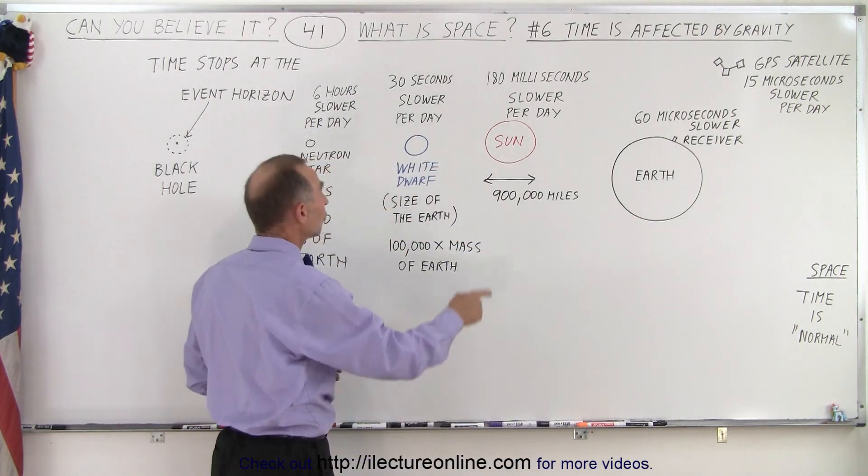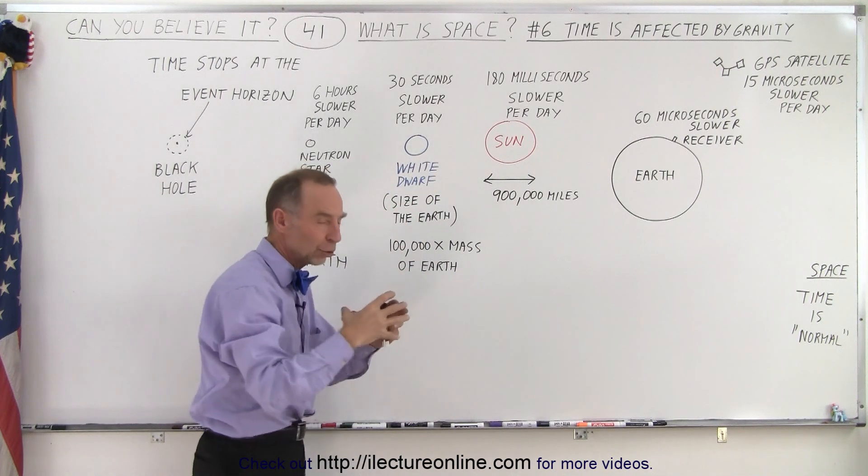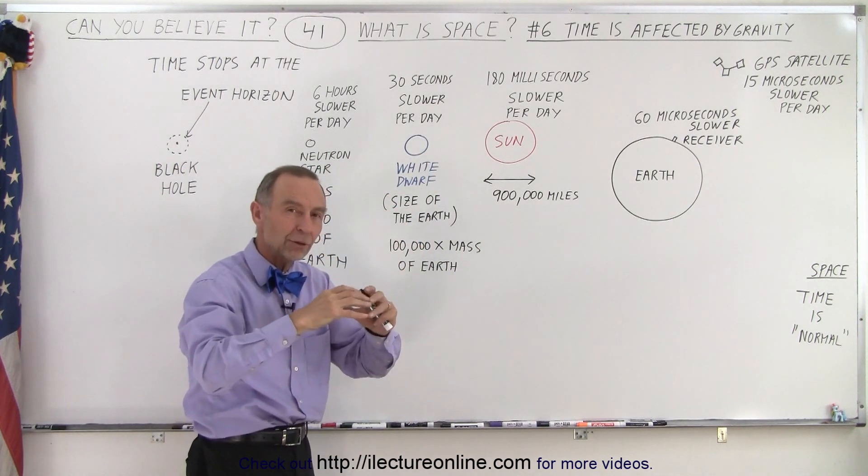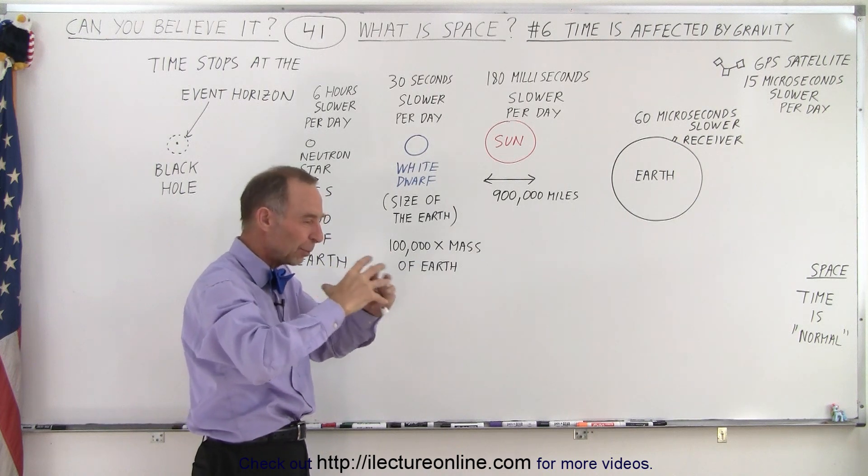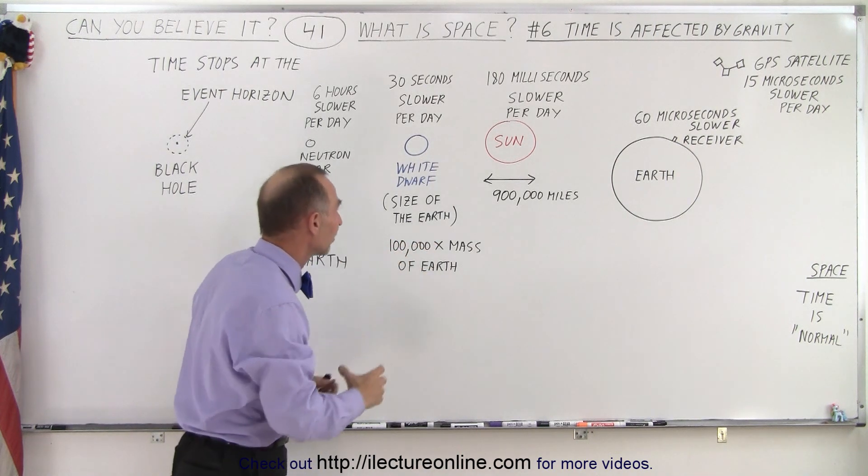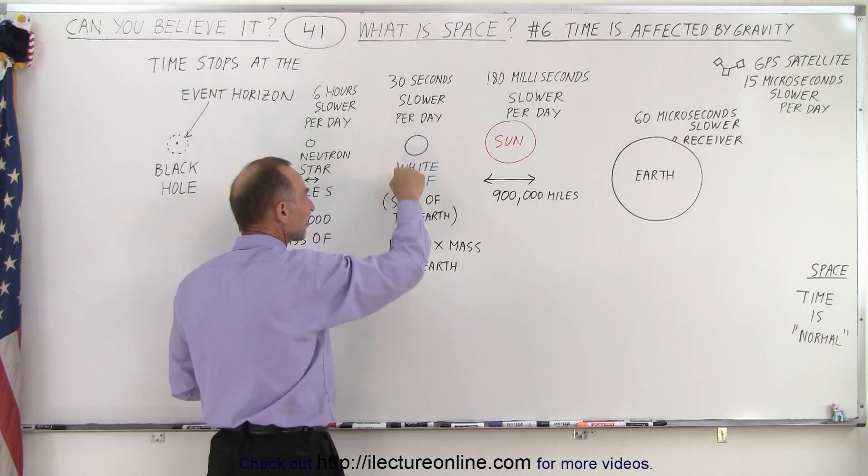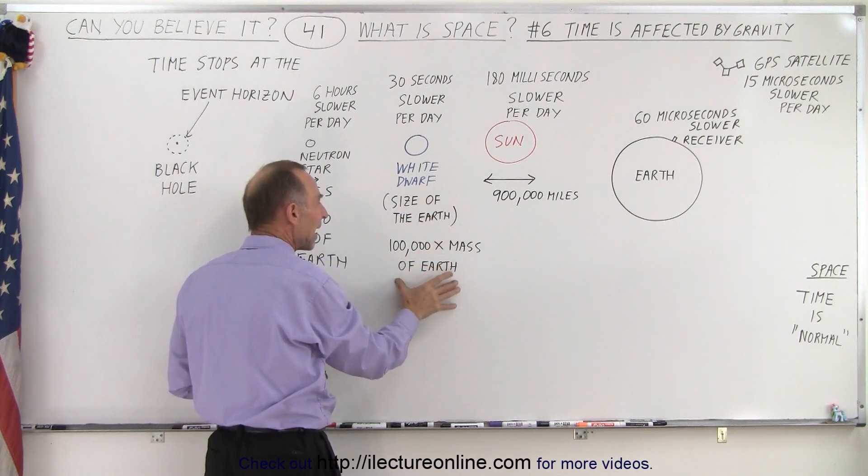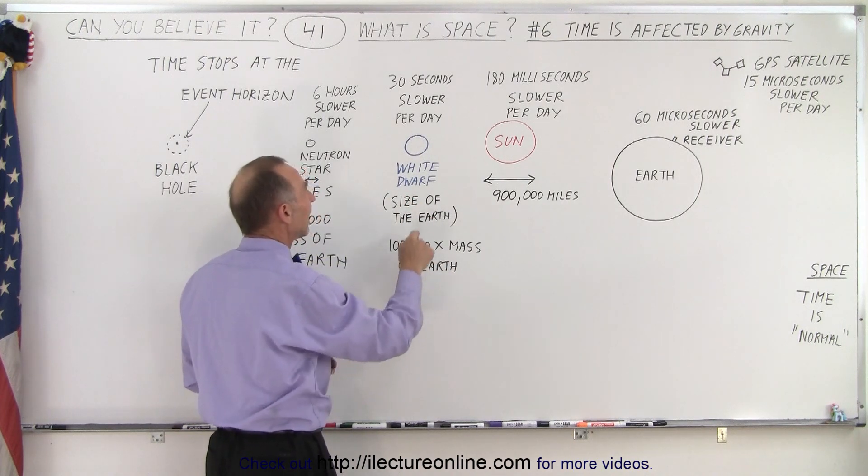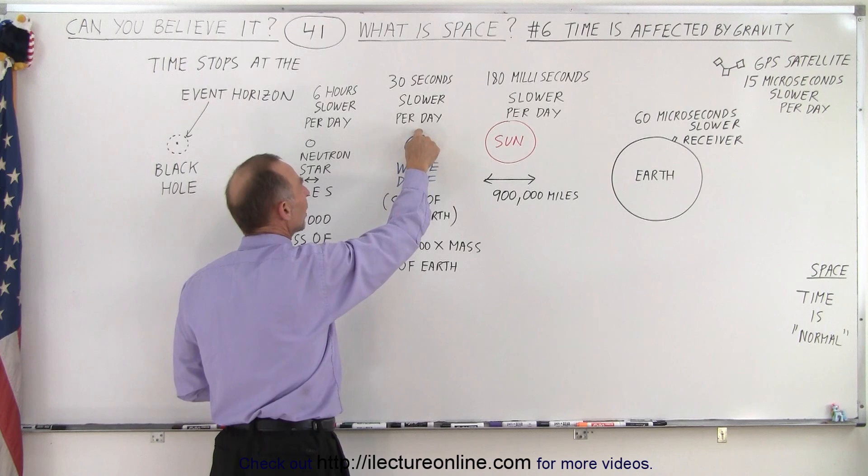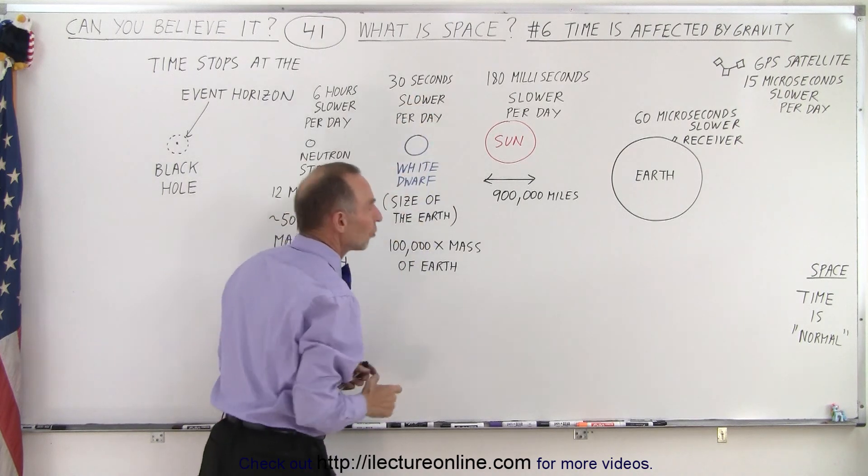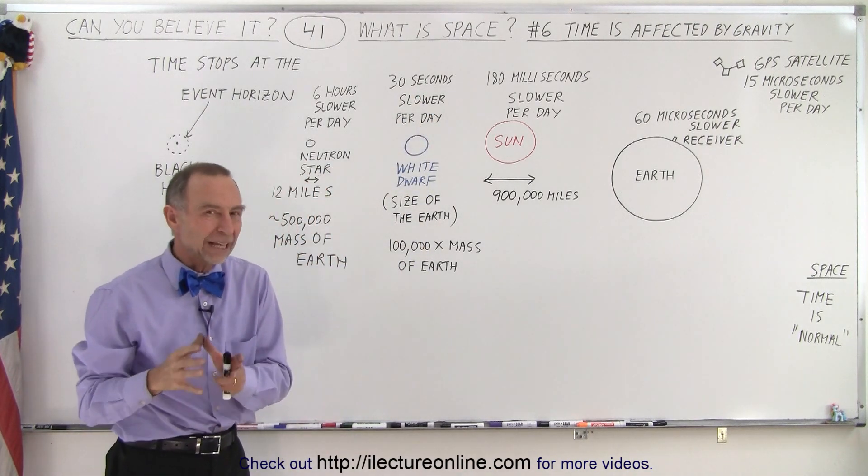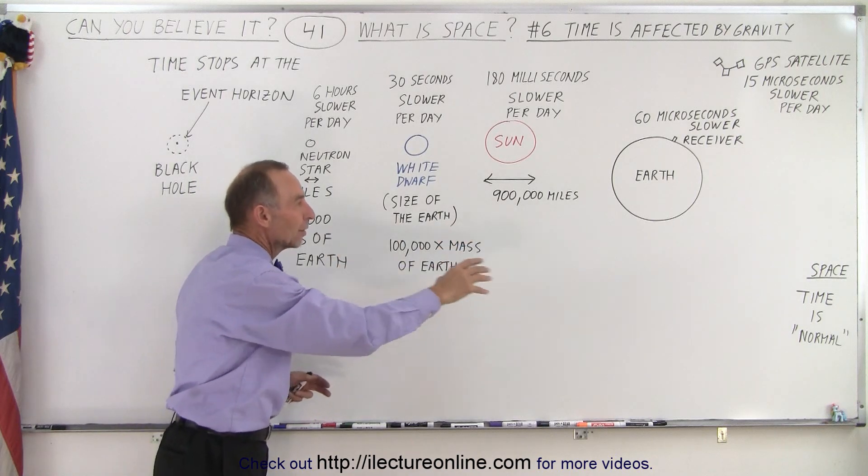And then if we go to a white dwarf, which is essentially the core of a star that is collapsed in on itself and only the electron degeneracy, the repulsive electrons keep it from collapsing any further. Those are about the size of the Earth, but they contain the mass of about 100,000 Earths. And on the surface of one of those white dwarfs, time will run 30 seconds per day slower than they do out in space.